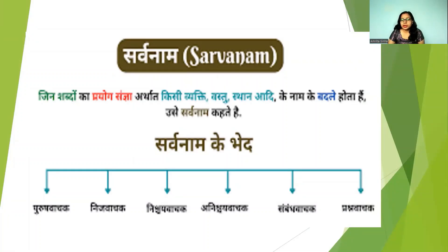Earlier we have done what is noun. So noun — name of things, places, all those things. But here we will not use the names. We will use a different word instead of those names.